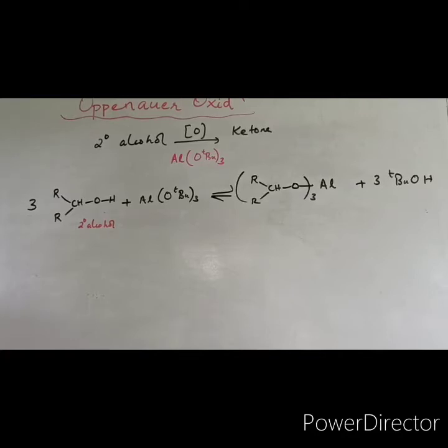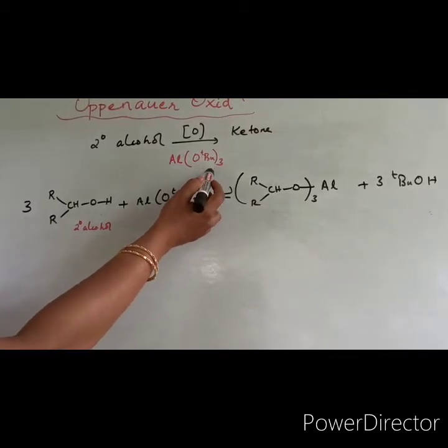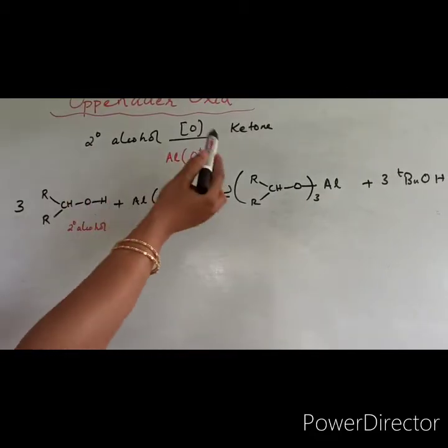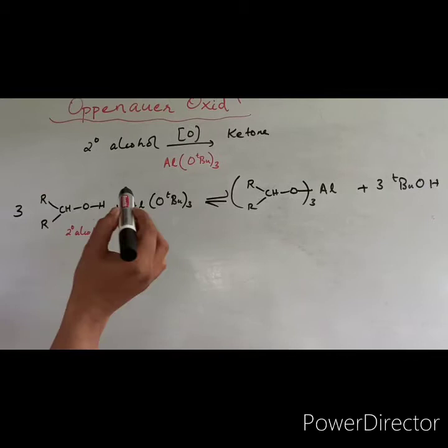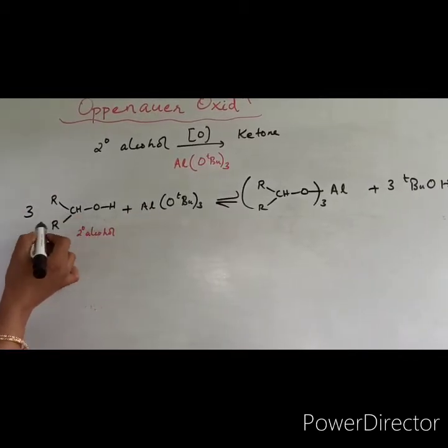Oppenauer oxidation. In this oxidation, a secondary alcohol is oxidized to ketone in presence of aluminum tertiary butoxide as well as acetone. So, secondary alcohol will be oxidized to ketone. This is secondary alcohol, carbon attached to two more carbons.